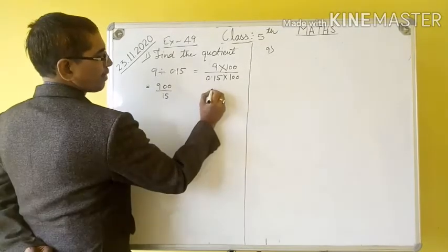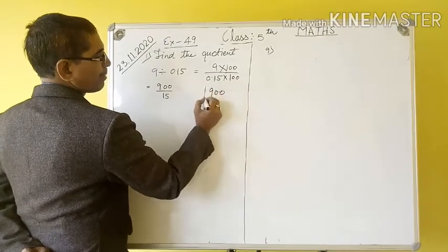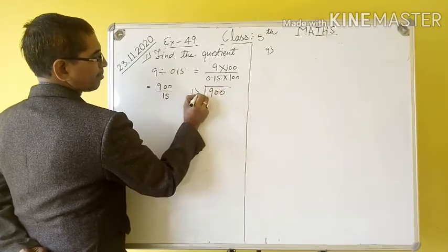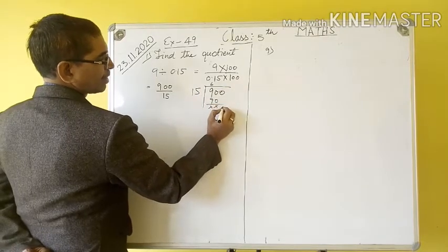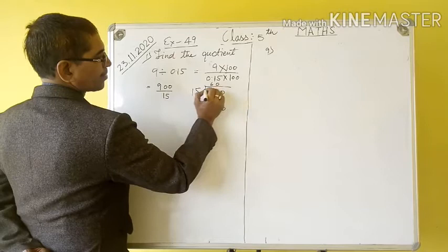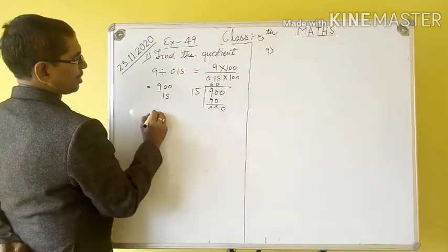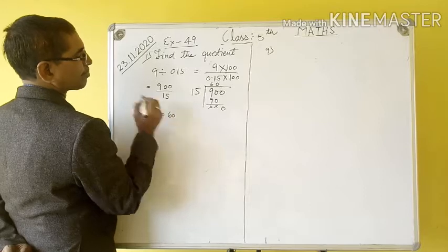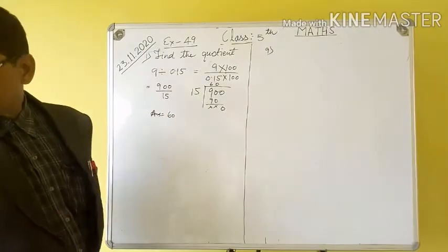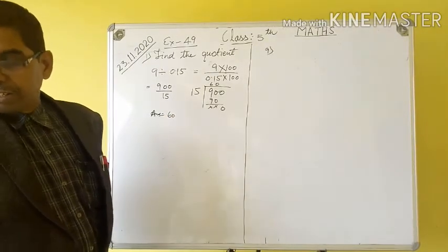Thus, now we divide 900 by 15 in an easy way. 15, 6 into 90 is 90, 0. Our answer is 60. Thus, the next question.